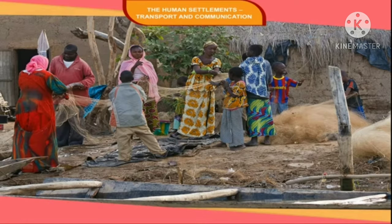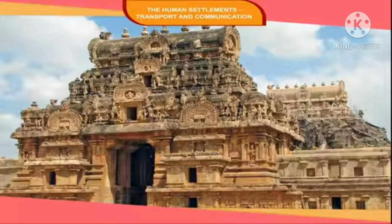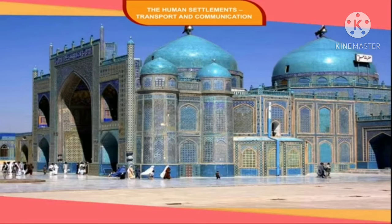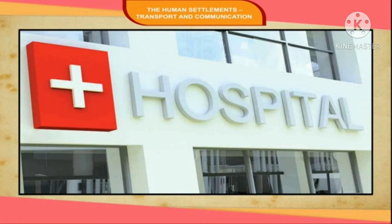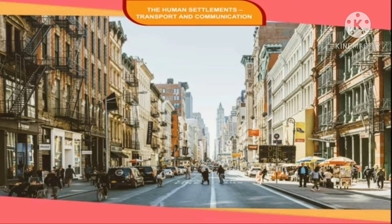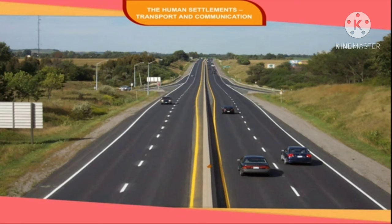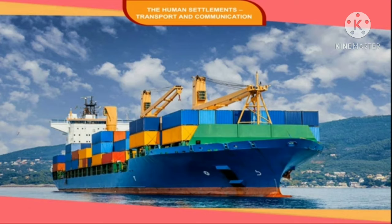Along with it, different types of buildings like schools, temples, mosques, town halls, hospitals, etc. were built. Today, we have well-planned cities with multi-storeyed buildings, broad roads, well-planned sewage systems and sanitation, and other facilities.